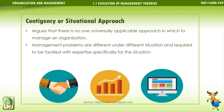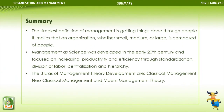The Contingency or Situational approach argues that there is no one universally applicable approach to managing an organization — management problems are different under different situations and require expertise specifically for the situation. In summary, the simplest definition of management is getting things done through people. Management of Science was developed in the early 20th century focused on increasing productivity and efficiency through standardization, division of labor, centralization, and hierarchy. The three areas of management theory development are classical management, neoclassical management, and modern management theory.